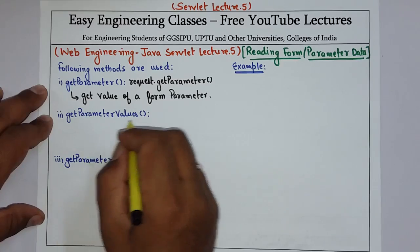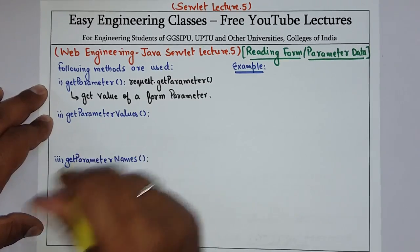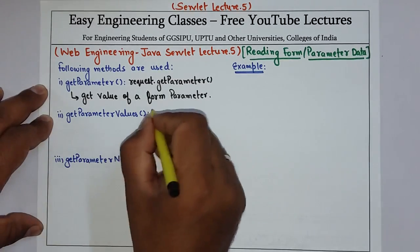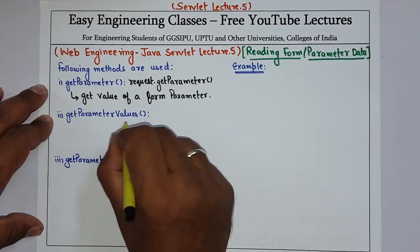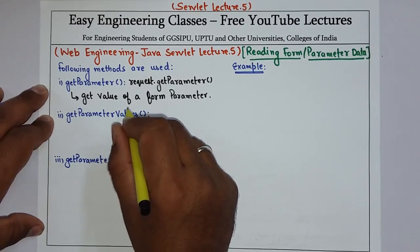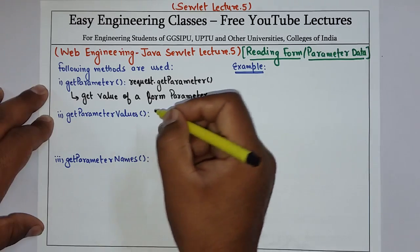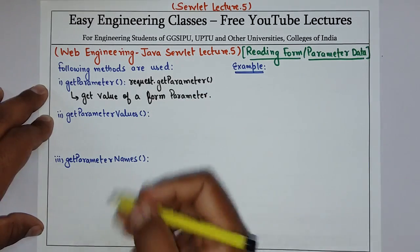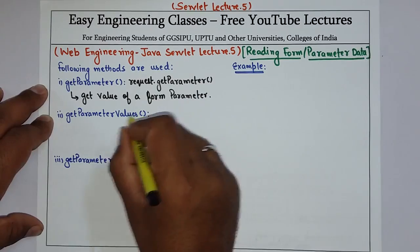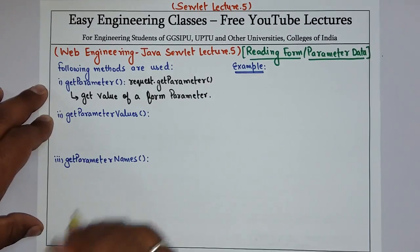Another method is getParameterValues. This method is used if the parameter appears more than once and returns multiple values — for example, checkboxes. In that case you have to use getParameterValues.